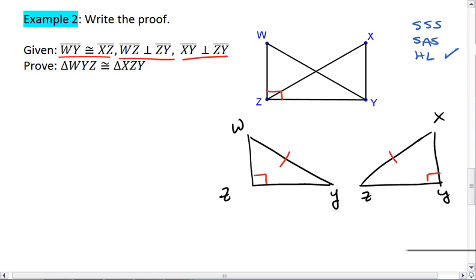Before I even start the proof, I want to figure out how I can use HL. I do have two right triangles, which is an important part of HL. I also have congruent hypotenuses, which is an important part of HL. But I don't have a congruent leg yet. Looking at my separated triangles, I don't see a congruent leg, so let's go back and look at the original drawing.